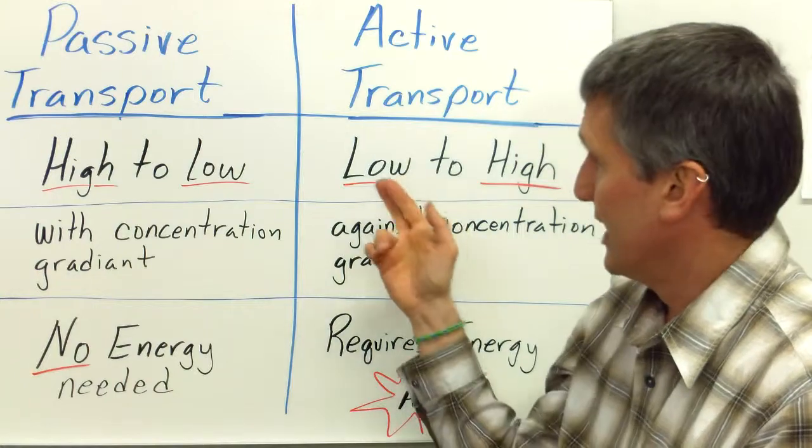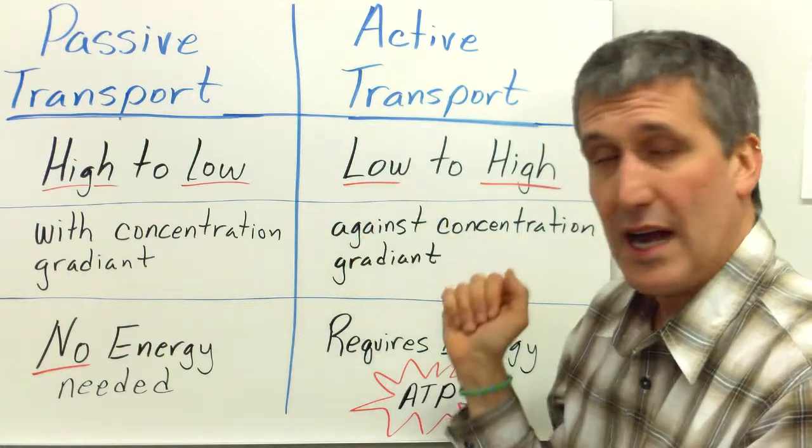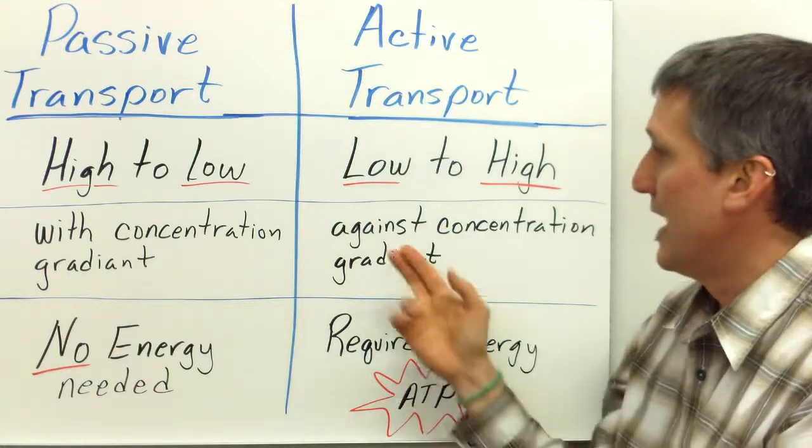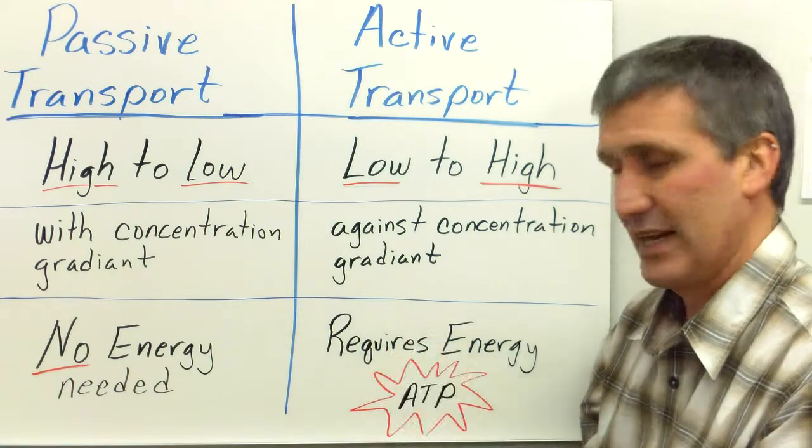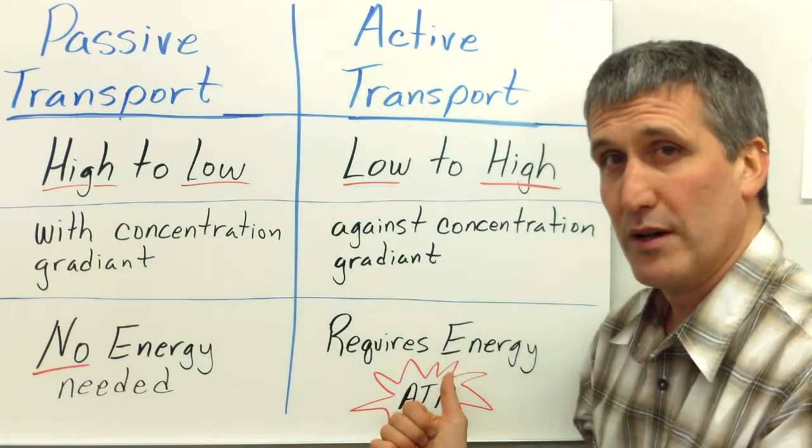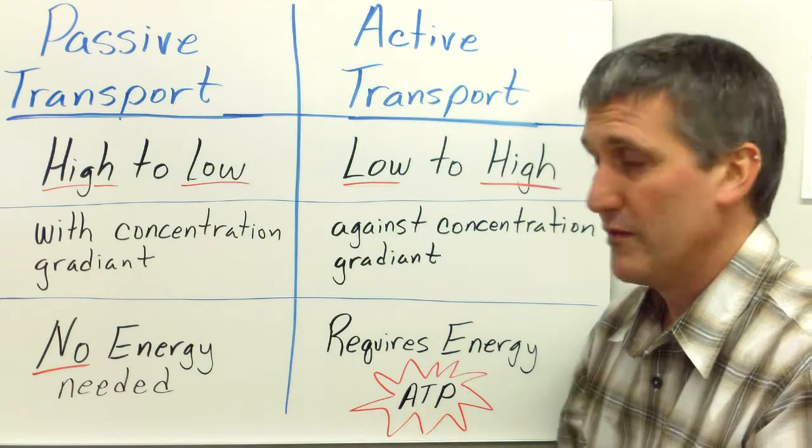Active transport, on the other hand, is when molecules are moved from low concentration to high concentration, and this is said to be against the concentration gradient. And this does require an input of energy by the cell in the form of ATP.